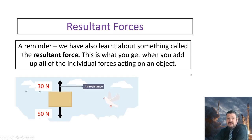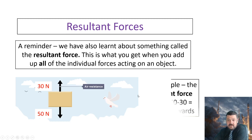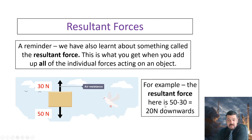Another reminder: we've looked at resultant forces. This is what you get when you add up all of the individual forces acting on an object. Looking at the picture here, we've got a box falling through the sky with 50 Newtons of gravity expressed as a force, and then 30 Newtons of air resistance acting in the opposite direction. All we do is take the highest from the lowest and the number gives us the direction and the magnitude — a vector quantity. So we've got 20 Newtons pointing downwards: 50 minus 30 leaves us 20 downwards.